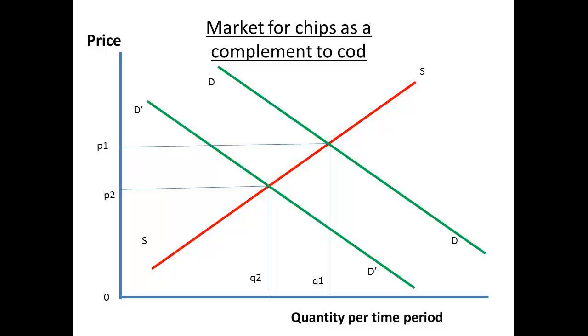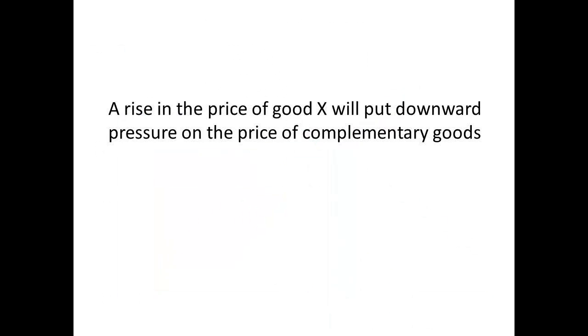The price rise for cod and haddock will reduce demand, so the demand for chips falls from DD to D1D1. We can see that this will move toward a new equilibrium point of a lower price, P2, with the reduced quantity Q2 being supplied. The effect is that the rise in price of good X exerts a downward pressure on the price of complementary goods.